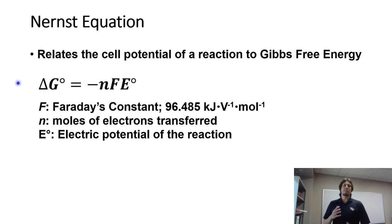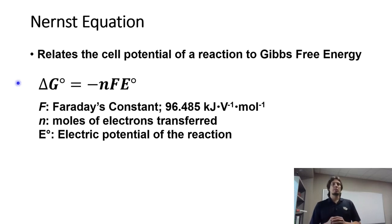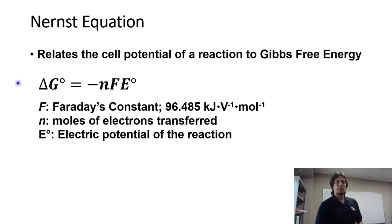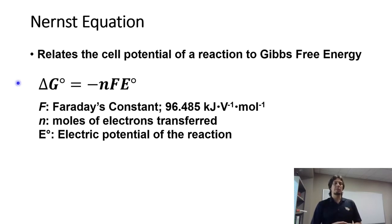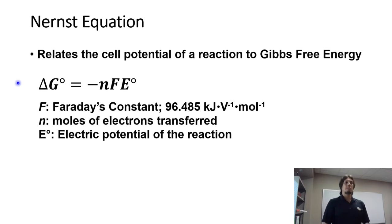In this video we're going to discuss the Nernst equation and how to use it. The Nernst equation relates the cell potential of a reaction to Gibbs free energy. The equation is: delta G-not, the standard Gibbs free energy under standard conditions, is equal to negative n times F times E-not.